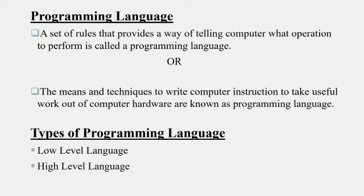The topic of today is programming language. A programming language is a set of rules that provides a way of telling the computer what operation to perform. If there is any language that is made, there are some set of rules that are defined, and then a whole language can be made. In this way, a computer programming language is a set of rules that tells the computer what action to perform.